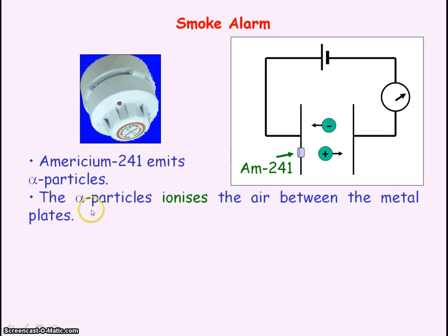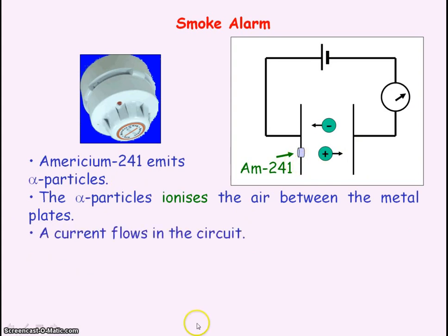The alpha particles are strongly ionising, so they ionise the air between the metal plates. The charged ions cause a current in the circuit.